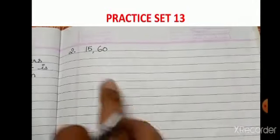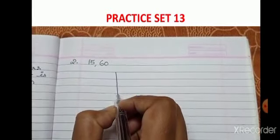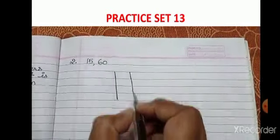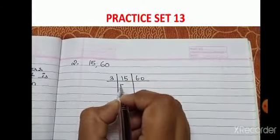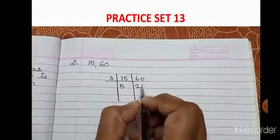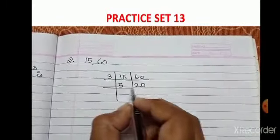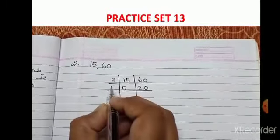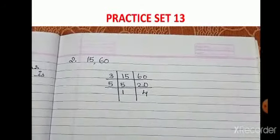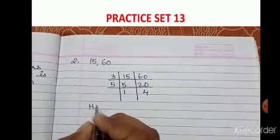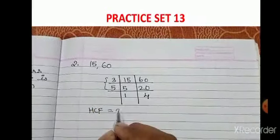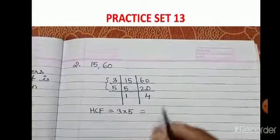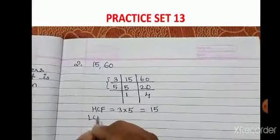Now the next pair: 15 and 60. Both 15 and 60 are divisible by 3: 3 × 5 = 15 and 3 × 20 = 60. Then 5 and 20 are divisible by 5: 5 × 1 = 5 and 5 × 4 = 20. Now to find HCF we need the common factors: 3 × 5 = 15.